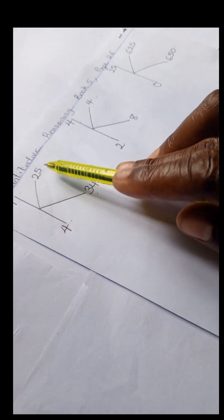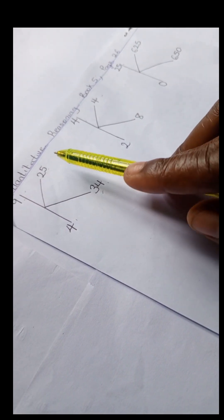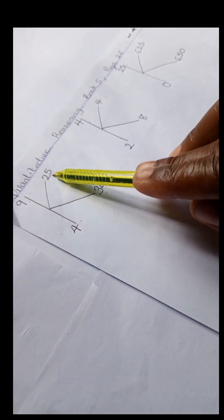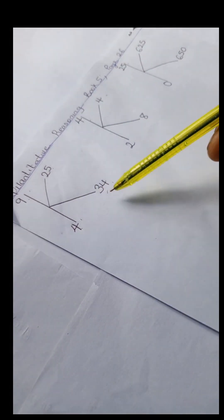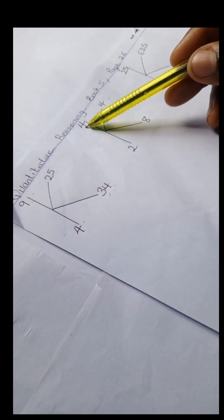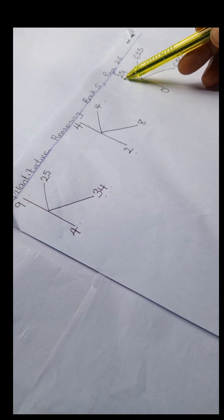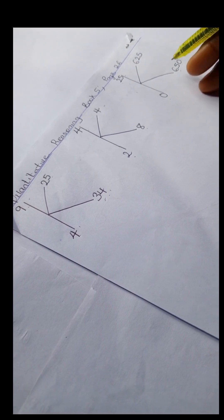Right, so we have this example from Lantern Step Book 5. We have here 9, 25, 4, 34. And here we have 4, 4, 2, 8. And here we have 25, 625, and 650. And here we have 0.